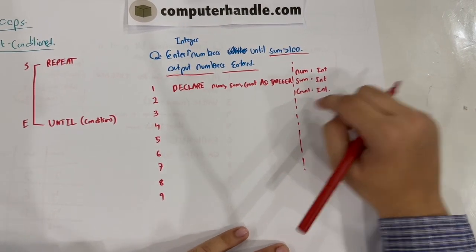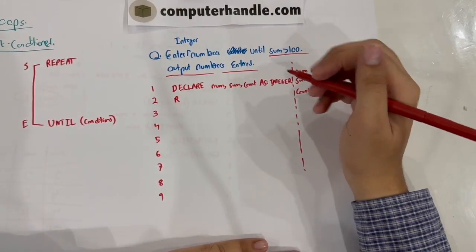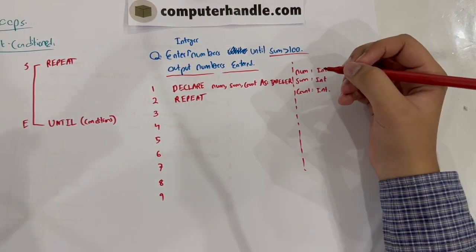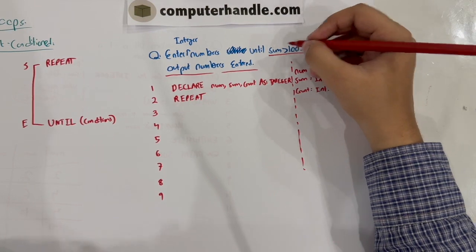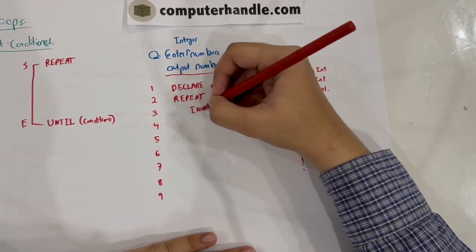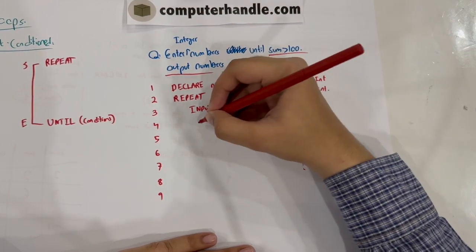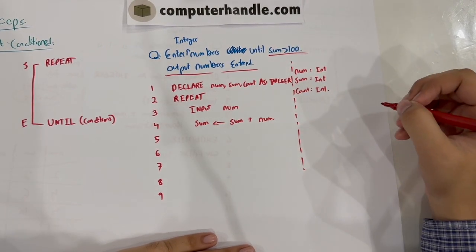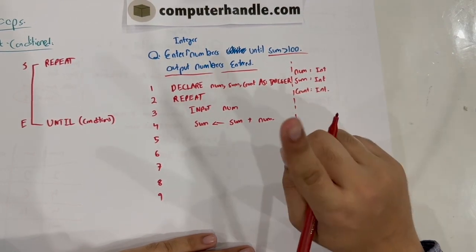Now we're going to start our repeat loop. This time we're not going to have an input statement before the repeat loop. So we write 'repeat', and inside the loop we write 'input num'. Then we sum it up in a similar way to how we did it in the previous lecture.